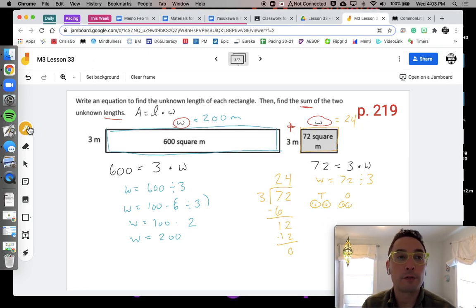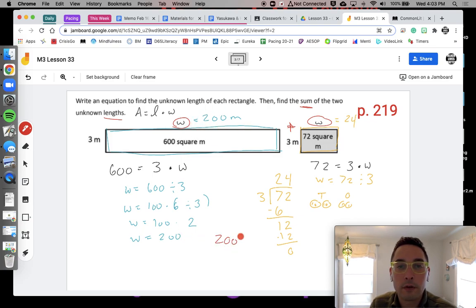Well, so the last step I'm going to need to do is go back to that question in the beginning. What are we trying to find out? What is the sum of the two unknown lengths? So this unknown length was 200. This unknown length was 24. And the sum means add it. So the answer would be 224.